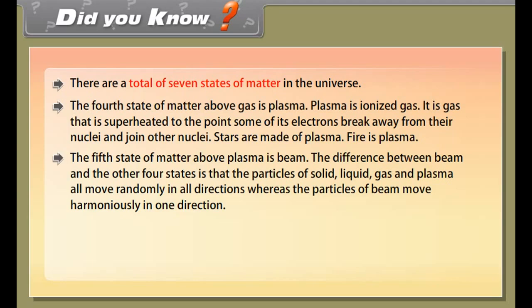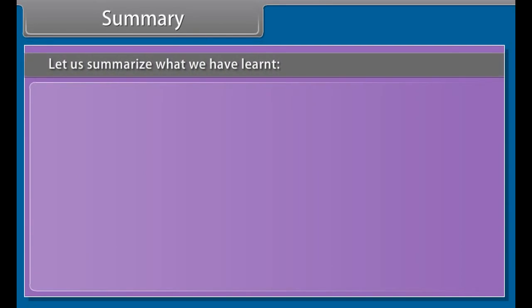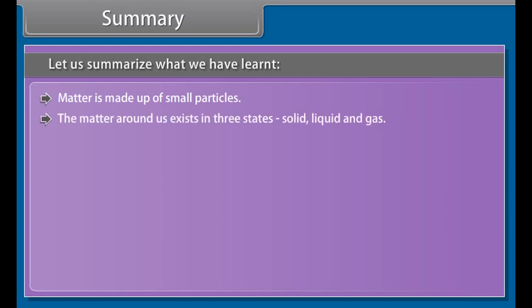The fifth state of matter above plasma is beam. The difference between beam and the other four states is that the particles of solid, liquid, gas, and plasma all move randomly in all directions, whereas the particles of beam move harmoniously in one direction.